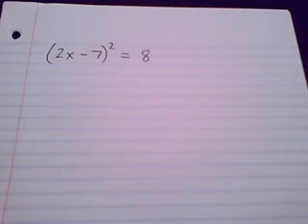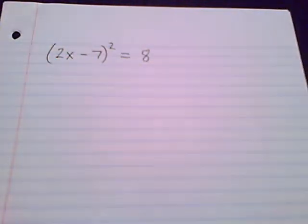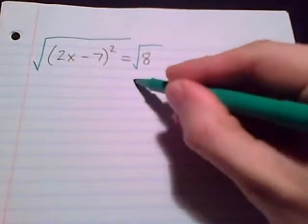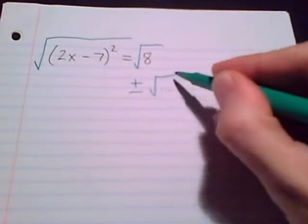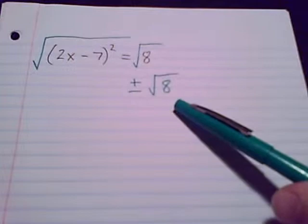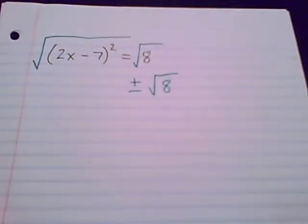It is set up well for the square root property, because on the left side I have a squared section that is totally isolated — no other terms outside of this set of parentheses that has the exponent of 2. So that's what tells me to go for the square root property. Square root both sides, and that gives us positive or negative square root of 8. It's not a perfect square, so I'm just leaving it as radical 8 for now.